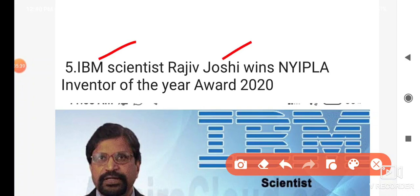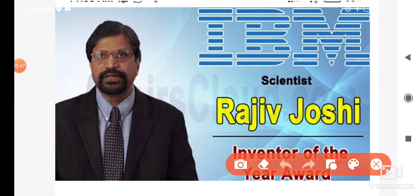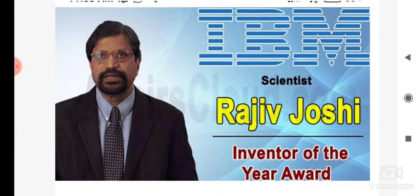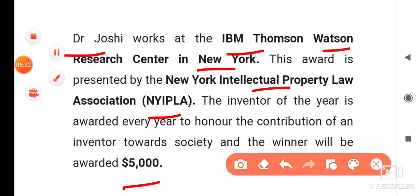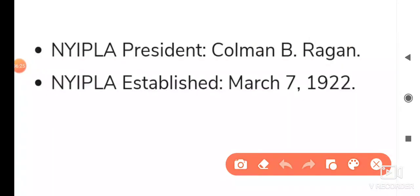IBM scientist Rajiv Joshi wins the NYIPLA Inventor of the Year Award. Dr. Joshi works at IBM Thomas J. Watson Research Center in New York. This award is presented by NYIPLA — New York Intellectual Property Law Association. The president of NYIPLA is Coleman B. Rangan. NYIPLA was established on March 7, 1922.